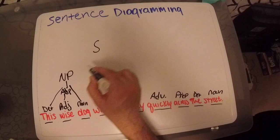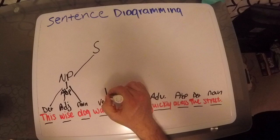Those connect to the sentence. Then we look at our verb. Walked is our verb phrase, which is then once again connected.